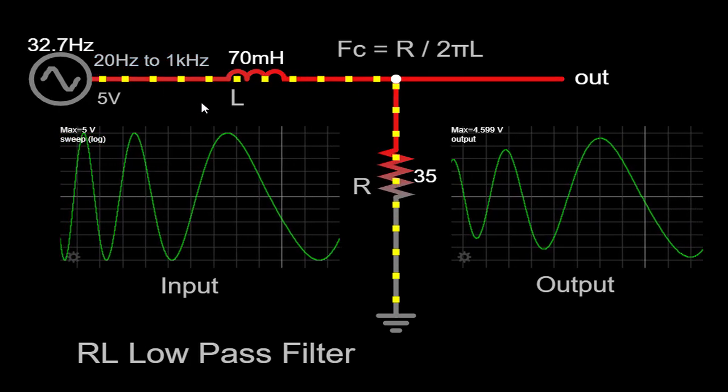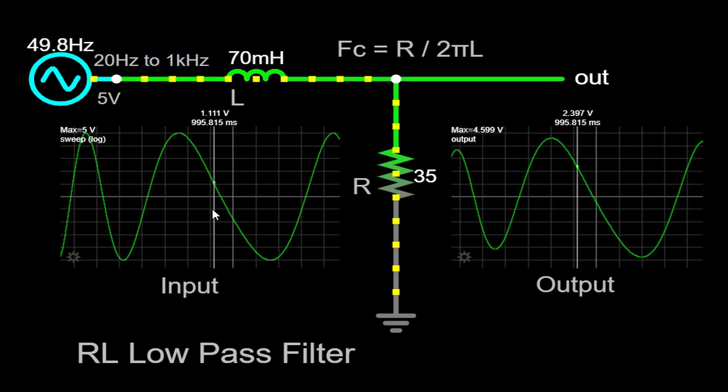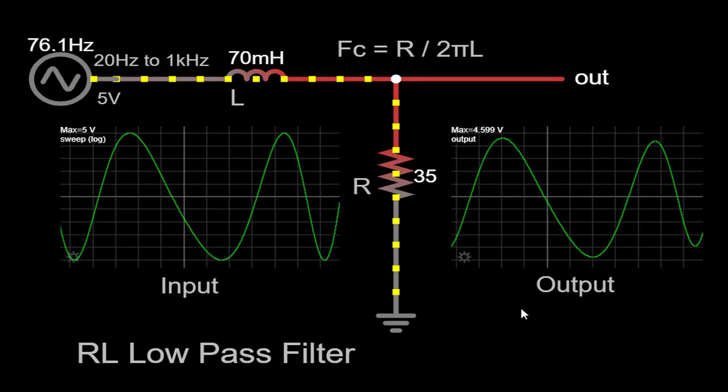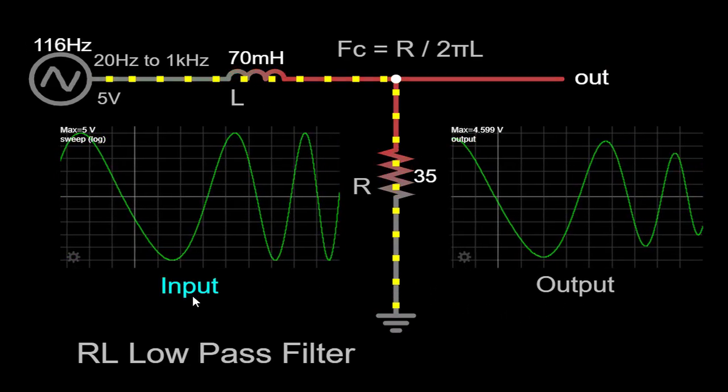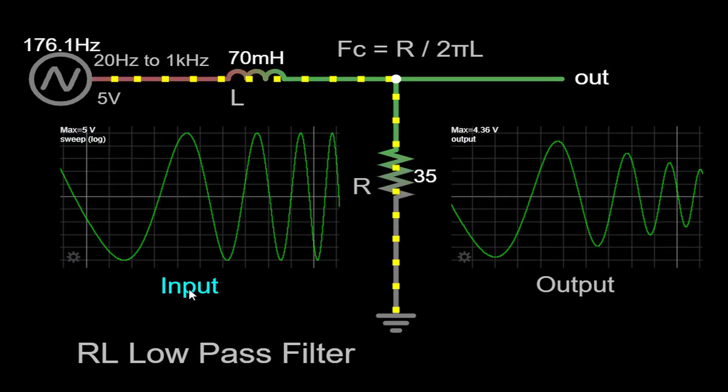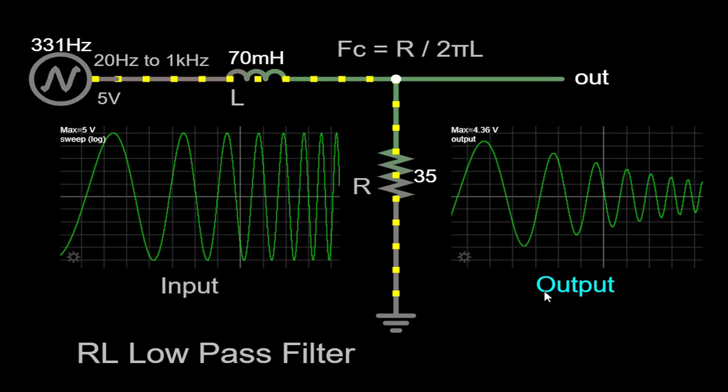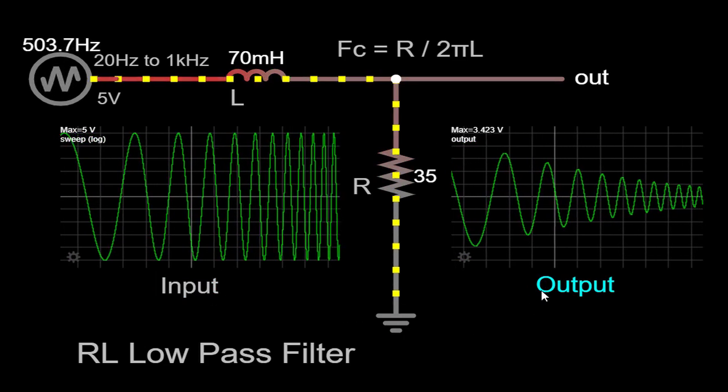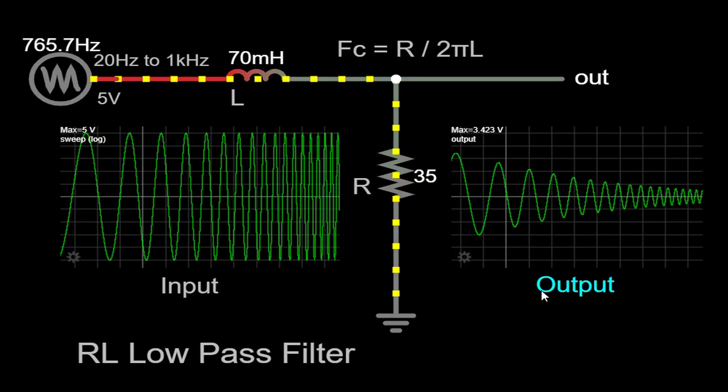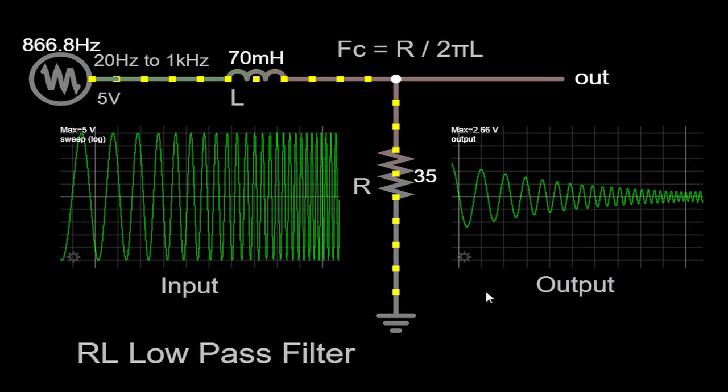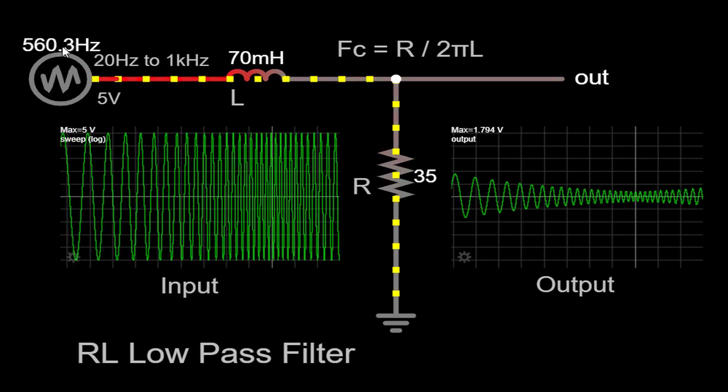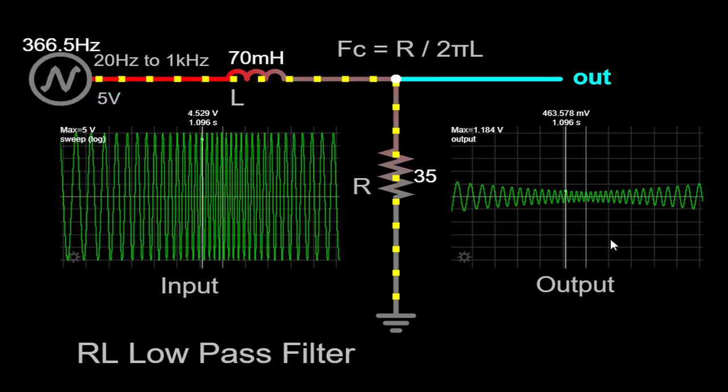As we run the simulation and observe the scope, we will witness the input and output waveforms. The input waveform represents the original signal fed into the RL low-pass filter, while the output waveform shows how the filter modifies the input signal by attenuating higher frequencies. As the frequency sweep starts at lower frequencies, the input and output waveforms align closely.